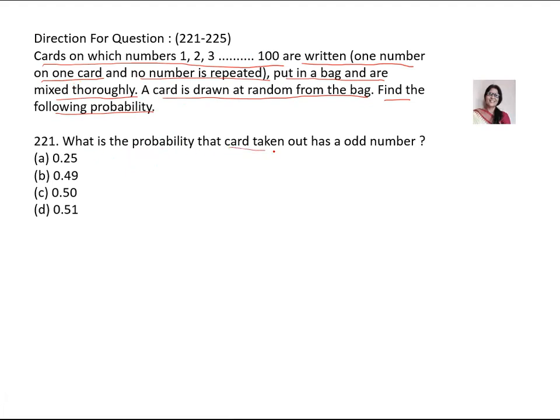What is the probability that card taken out has an odd number? The possibilities are 0.25, 0.49, 0.50, 0.51. So when we take 1 to 100, there are 100 numbers. And 100 numbers, it starts from odd number and ends in even number. So total number of odd numbers are 50 and even are also 50.